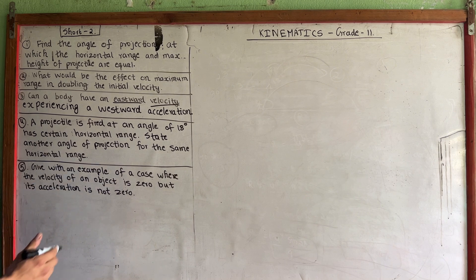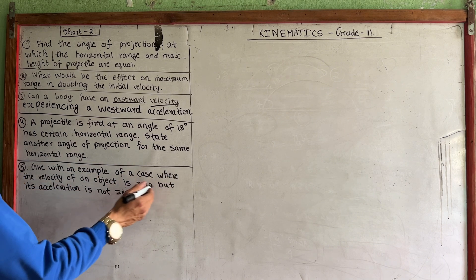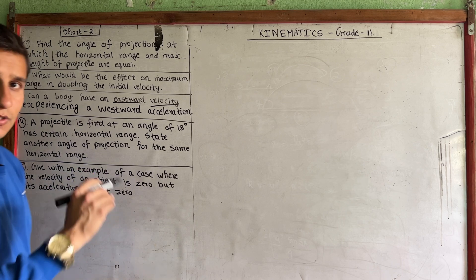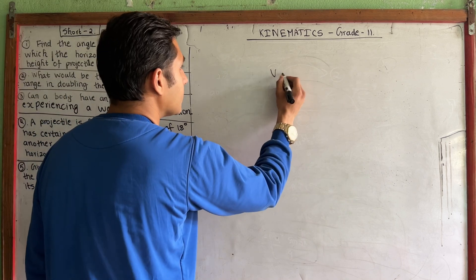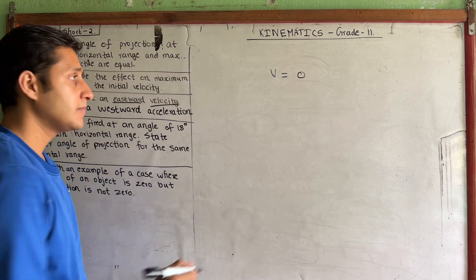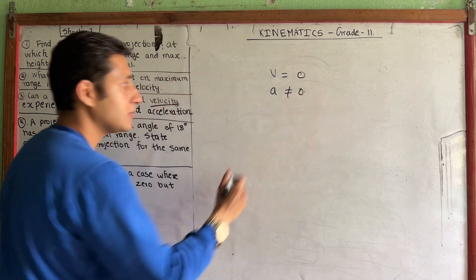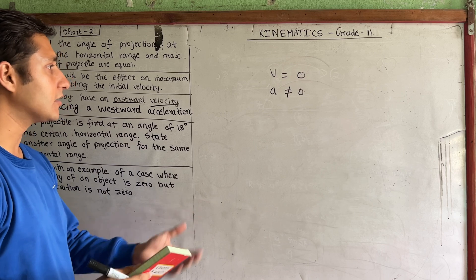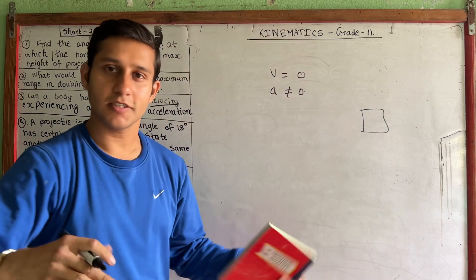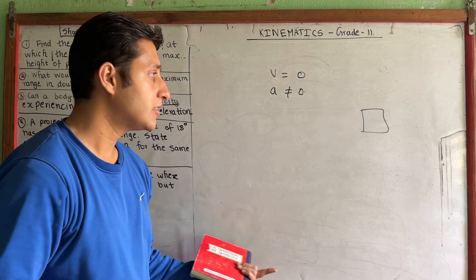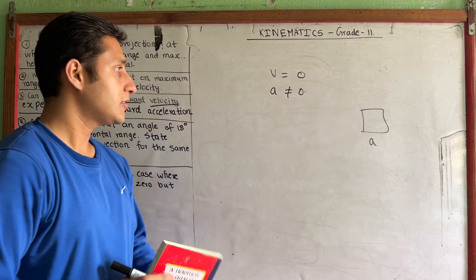Question number 5: Give an example of a case where the velocity of an object is zero but its acceleration is not zero.